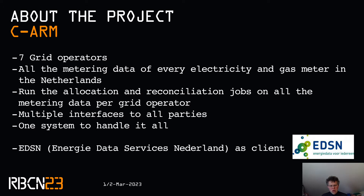Elysian commissioned a few years ago the development of the CARM system. CARM stands for Centralized System for Allocation, Reconciliation and Metering. It is a system used by the seven grid operators in the Netherlands. They moved from their own seven different systems to one centralized system. CARM stores all the electric and gas metering data of all households and industry meters, runs the allocation and reconciliation jobs on that data, handles different interfaces to several parties, and processes thousands of messages on a daily basis — one system to do it all.